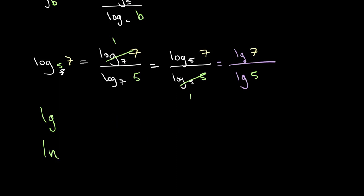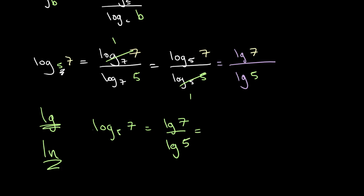Therefore, if we have a log that we want to evaluate, we can simply put it in terms of Lg or Ln. So in this case, if we want to evaluate log base 5 of 7, we can simply rewrite this as Lg of 7 over Lg of 5, and then plug both of these numbers into our calculator to get our answer.